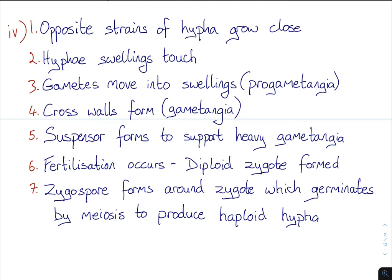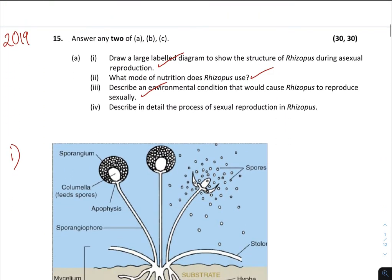So seven steps there — you didn't need all of them; I think you could get full marks with about five of those. I think out of the entire chapter this section is definitely the toughest and requires students to go back over and over again. I wouldn't learn any more than this, but I wouldn't learn any less either, because marking schemes do change. This is really the bare minimum. It came up in 2019 and could come up again in 2021.